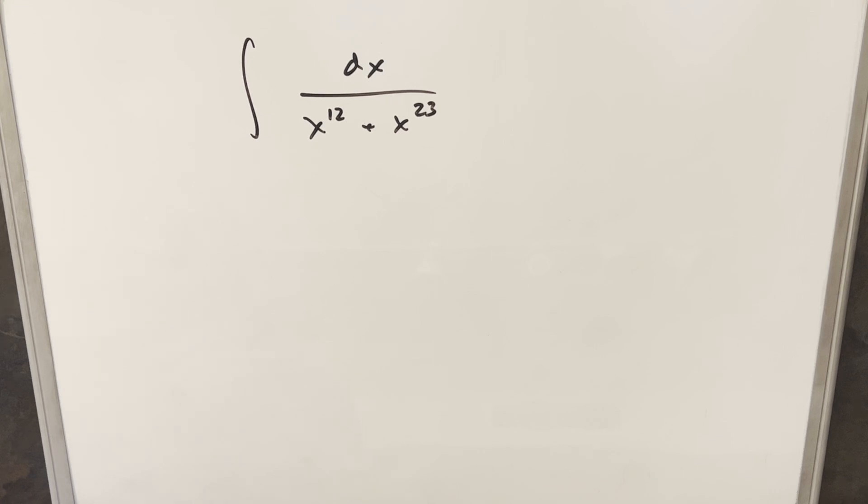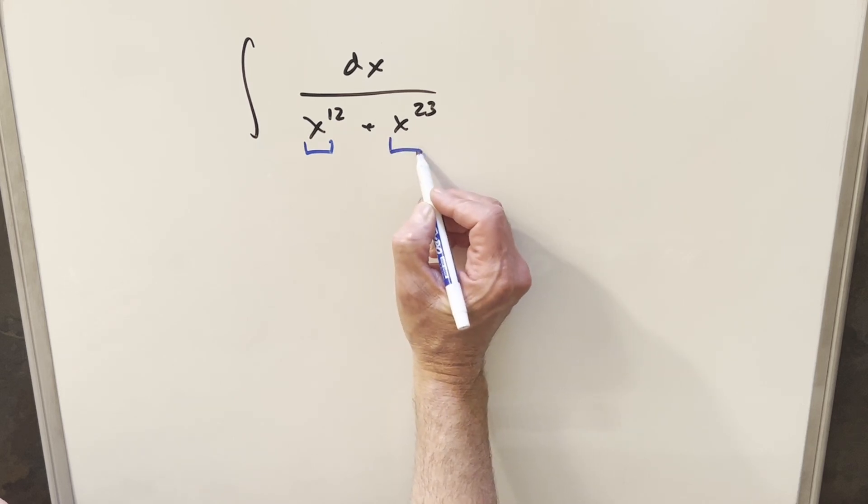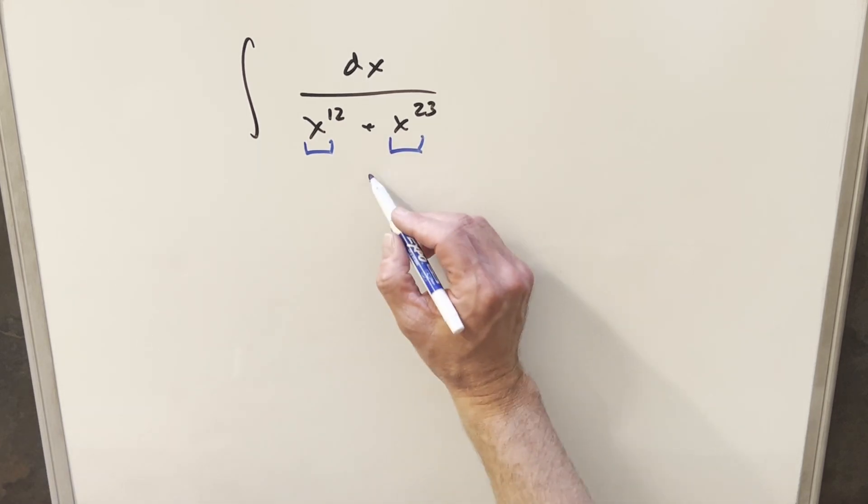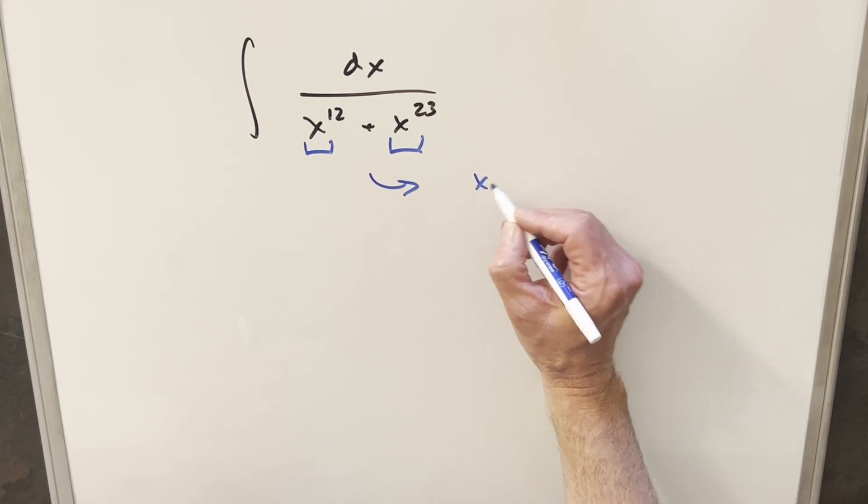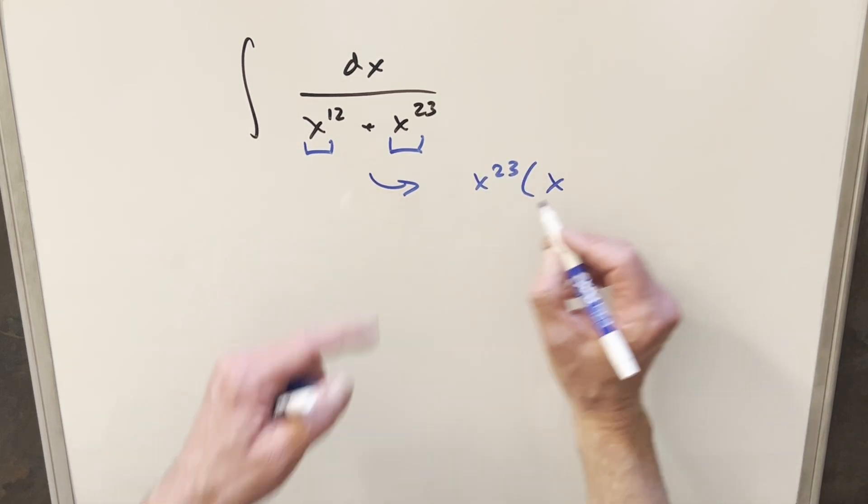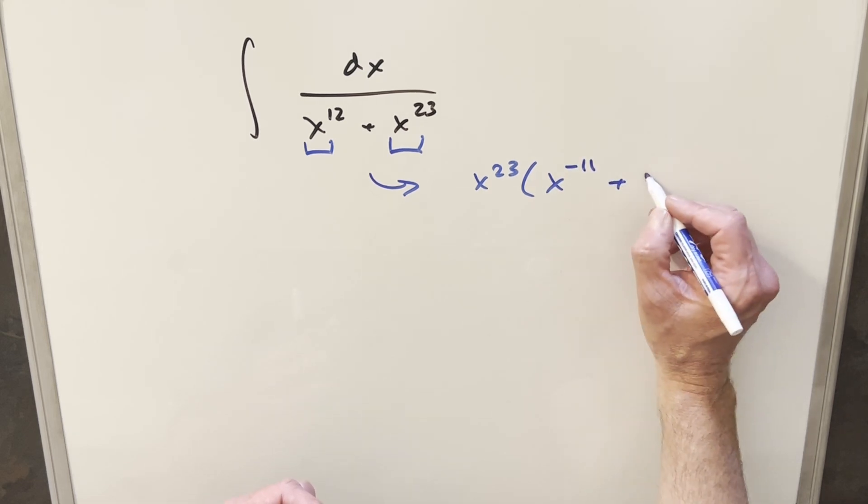Okay, I did one really similar to this not too long ago. I thought it was an interesting scenario. What I want to do is factor - I either want to factor out x to the 12th or x to the 23rd, and what I'm going to choose to do is let's factor out the x to the 23rd. When I do that, you'll notice that the first term is going to become x to the minus 11, and the second term is just going to be plus 1.